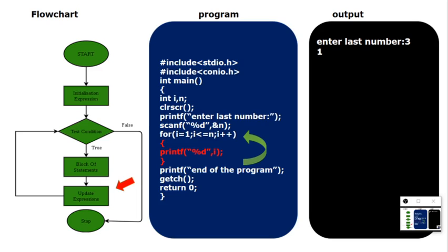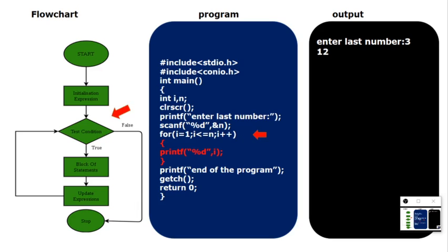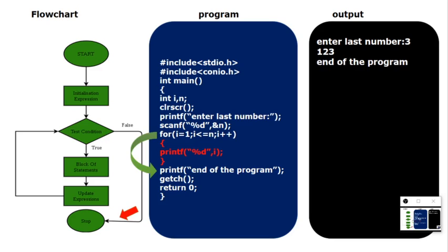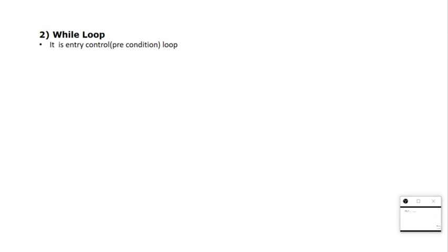i++ means i = i + 1, so every time i increases by one. Now it checks the condition: 2 <= 3 — condition satisfied, prints 2. Increases to 3, checks 3 <= 3 — satisfied, prints 3. Then i increases to 4, checks 4 <= 3 — condition fails, so it comes out of the loop. The output prints 1, 2, 3, then end of program.